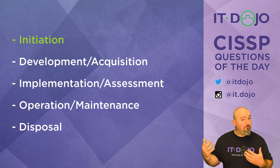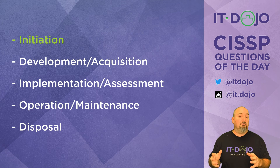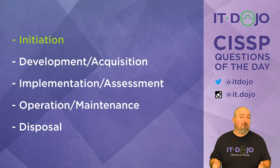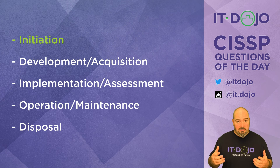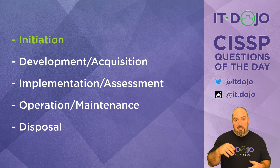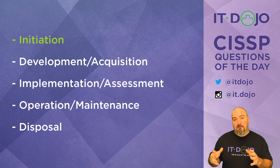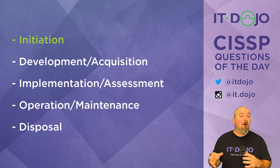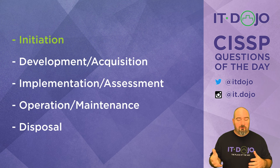Also in the initiation phase — which is what this question is about — you're going to do an initial privacy impact assessment, where you ask: does this system utilize personally identifiable information? And if so, in what respects and scenarios will it do that, and what requirements will be upon us to put adequate protections and controls in place for whenever PII is involved? That's something that gets its initial consideration in the initiation phase. Keep in mind it doesn't just stop there — the analysis of the impact on PII goes throughout the entire life cycle of the system being developed. But the initial considerations are in the initiation phase.